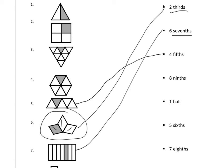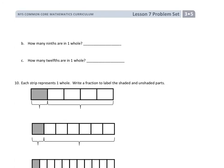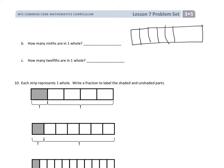All right, go ahead and finish the front side, and then flip on over to the back side. We're going to start here: how many ninths are in one whole? So we're going to start over here and draw a little rectangle. This is our whole, and it's asking us to make ninths. One, two, three, four, five, six, seven, eight — that's nine pieces. So how many ninths are in one whole?